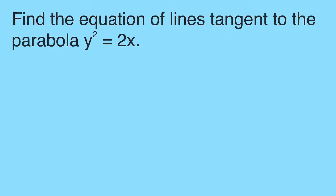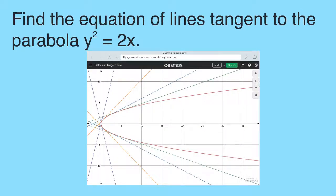Find the equation of lines tangent to the parabola y squared equals 2x. You are looking for the differential equation representing this family of broken lines. The broken lines are tangent to the given parabola.